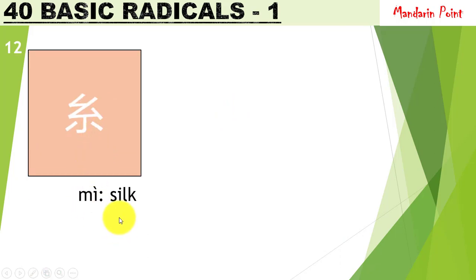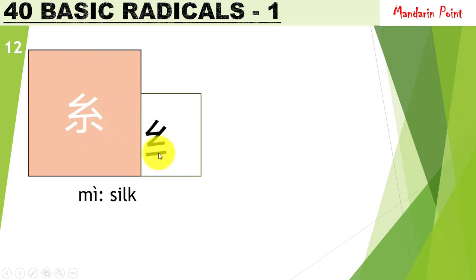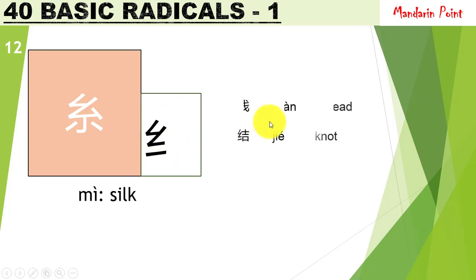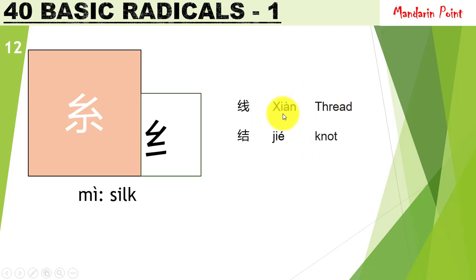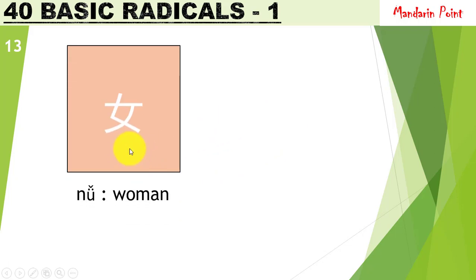The radical 糸 mì means 'silk' and it has a shorter form which is very commonly used. For example, 结 jié meaning 'knot' and 线 xiàn meaning 'thread' — both of these are related to silk. The next radical is 女 nǚ, meaning 'woman.' Whenever you see this radical with any character, you should understand that it is somehow related to women.